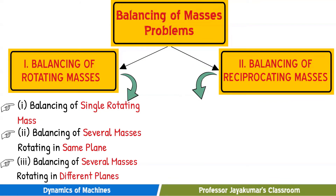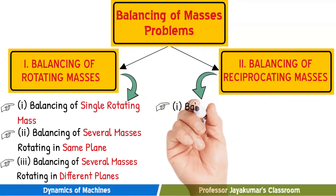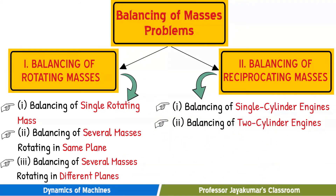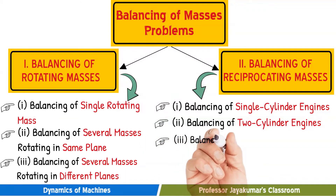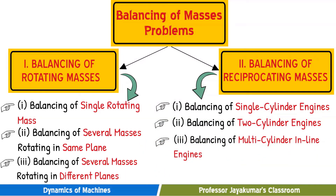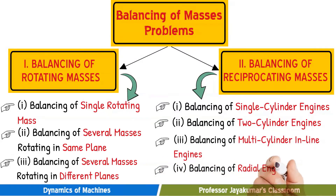We have four broader topics under balancing of reciprocating masses: we will start with balancing of a single cylinder engine, then balancing of two-cylinder engines, followed by balancing of multi-cylinder inline engines, and finally balancing of radial engines. This chart summarizes the overview of the various types of balancing of masses problems that we will discuss in this course.